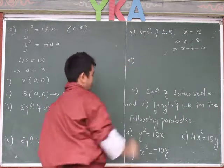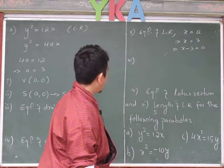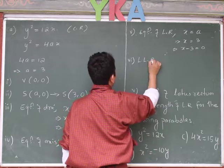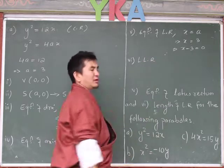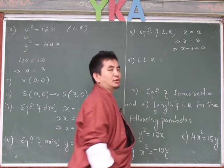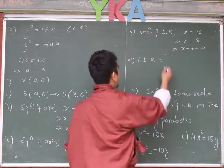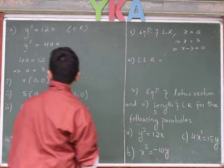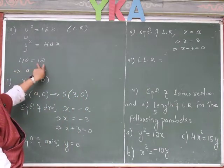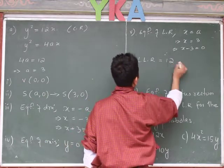Number six: length of latus rectum. The length of latus rectum, which you can write as LLR, is equal to 4a. The 4a value is given as 12. So length of latus rectum = 4a = 12 units.